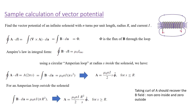Taking the curl of A should recover the magnetic field, which is non-zero inside and equal to mu-naught n I, and zero outside. We'll try taking the curl of these functions in class, verifying that, and doing at least one or two other exercises on the vector potential. Thanks for your attention and see you in class.